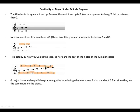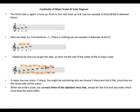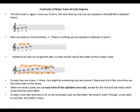G major has one sharp, F sharp. You might be wondering why we chose F sharp and not G flat, since they are the same note on the piano. When we write the scale, we use each letter of the alphabet only once, except for the first and last notes, which must have the same letter. G major must start and end on G, so we've already used up that letter. We haven't used F though, so we need to use that and make F sharp.